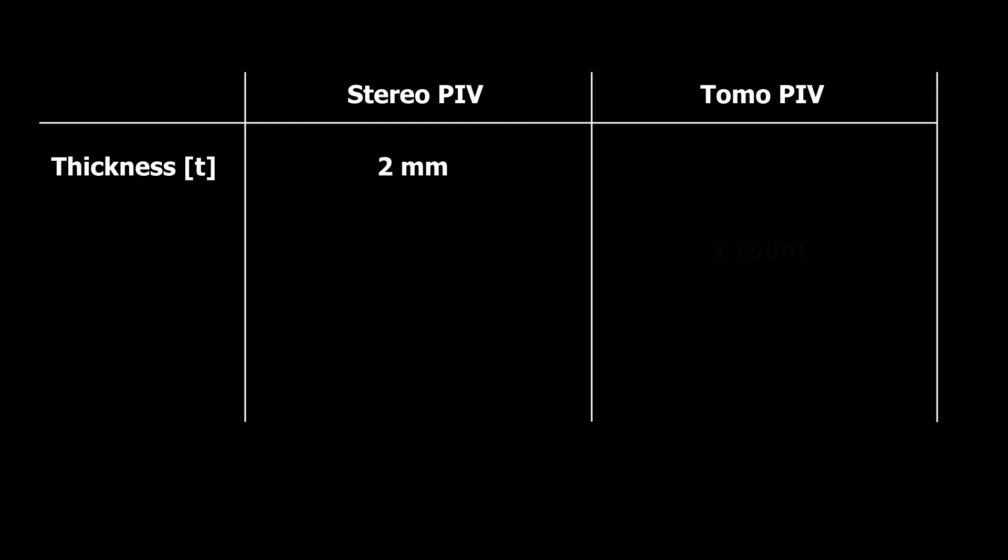Now we want to do tomo PIV with this same setup but we would like to interrogate a volume with a thickness of 80 millimeters. You see most wakes in small wind tunnel aerodynamics need this order of physical size to capture all flow features in the wake.